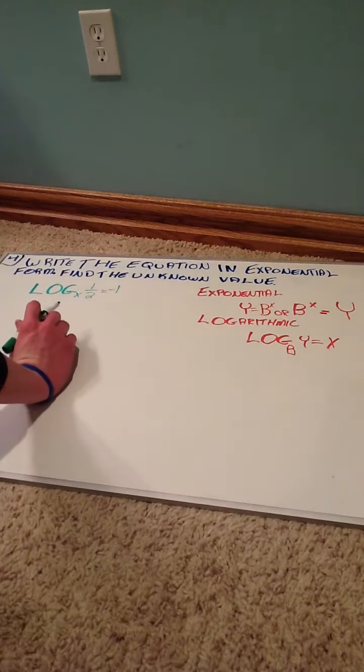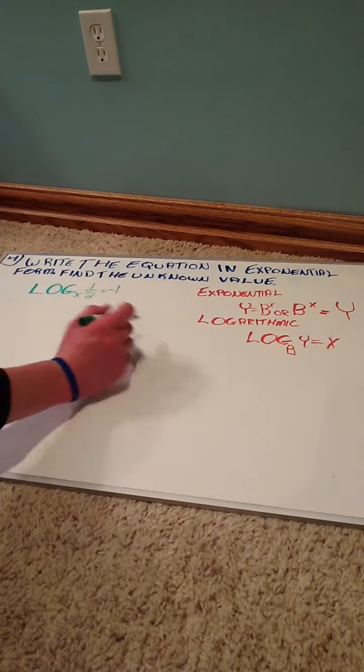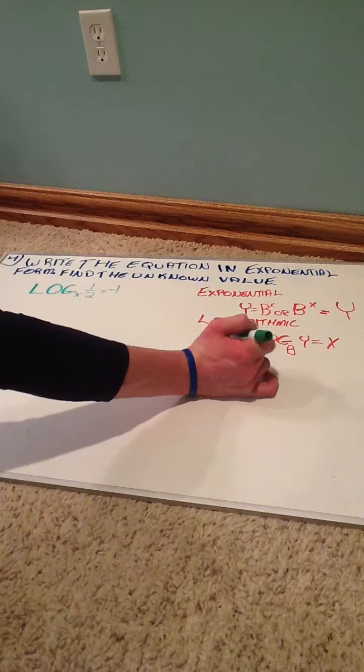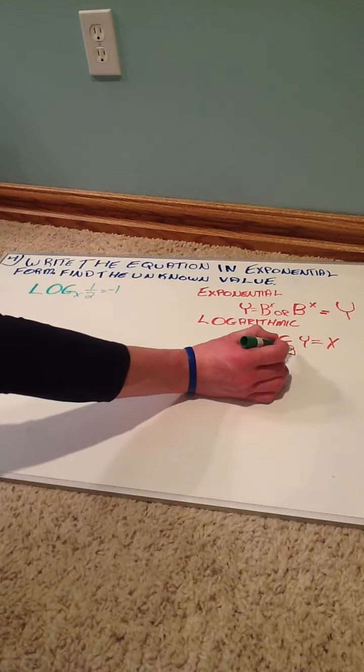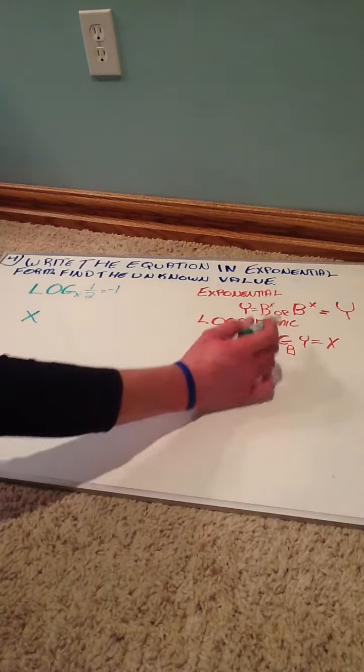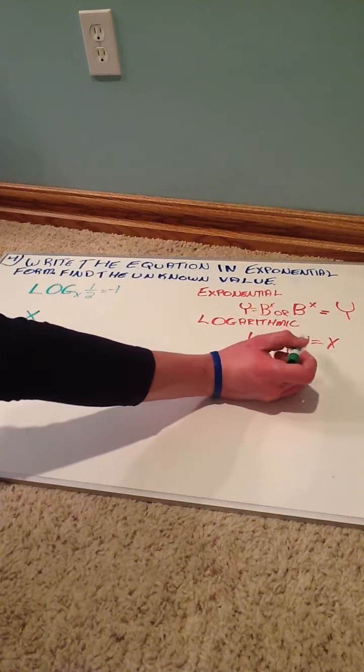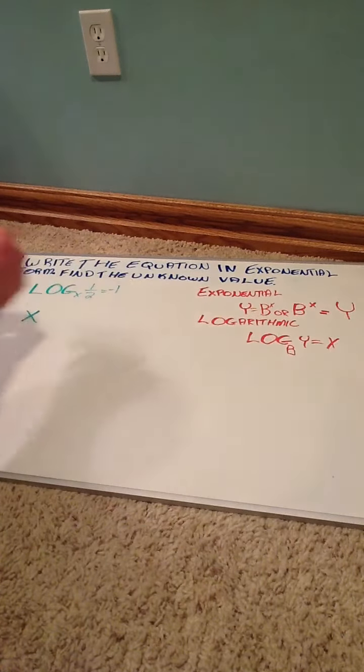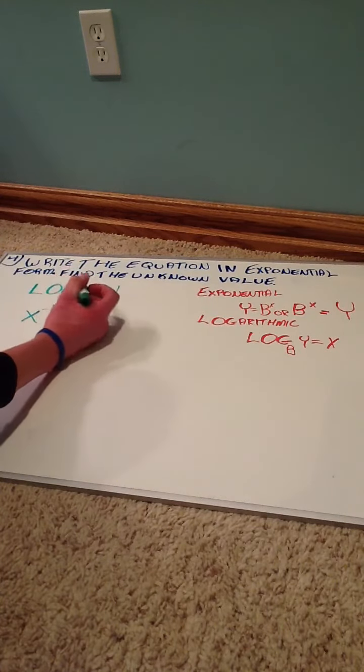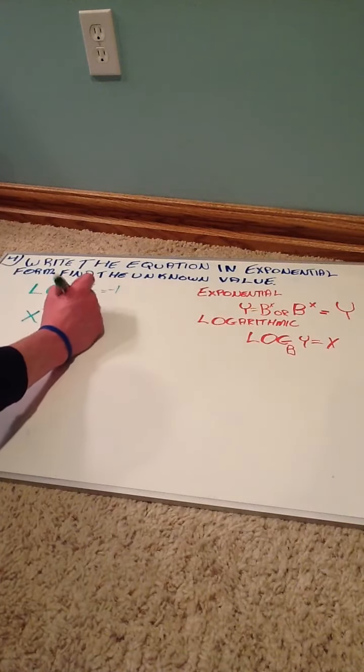So to change this back to exponential form, we'll kind of reference our two formulas. So the first thing we'll need is our b. If we look at the logarithmic form, that's our base, so our base is x. So now we have b, and now we have to find our exponent, which is the x value in the formula. So that'll be the negative one. So we have x to the negative one, and now we'll have our equals, and now we'll have what that'll equal, which is the y, which is one-half.